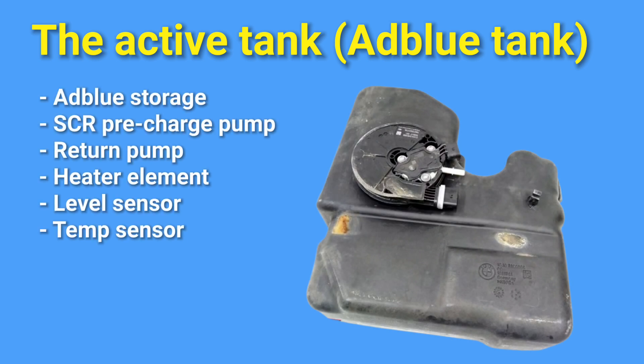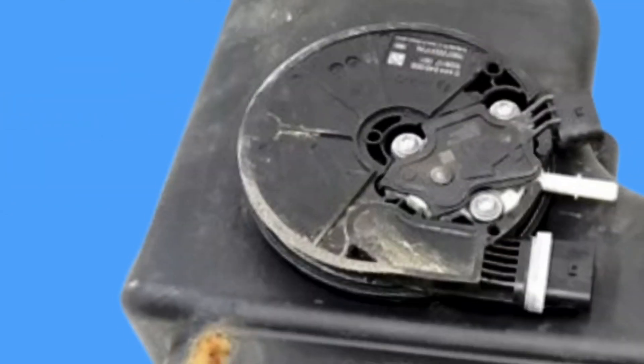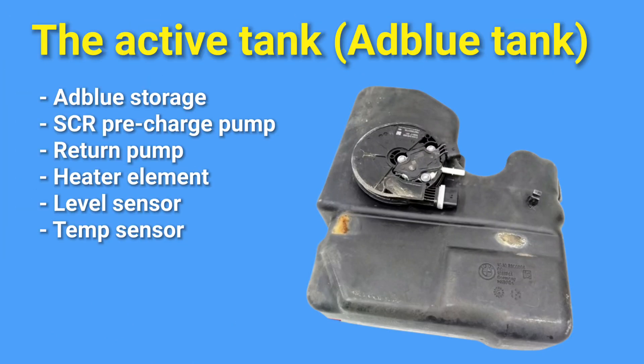The active tank is the reservoir that stores the AdBlue. Built into the tank is the delivery module, which houses the pump that pressurizes the line to the metering valve. It also sucks back unused AdBlue when the engine is off to prevent line freezing in cold ambient conditions. The delivery module also houses a heater and the AdBlue level sensor. The fluid level is measured by ultrasound — evaluation electronics transmit ultrasonic pulses that are reflected at the transition from AdBlue to air as echo impulses, which are then received, amplified, and converted into a digital signal.